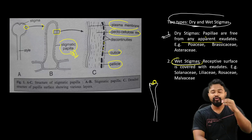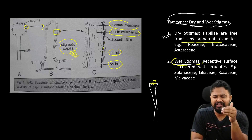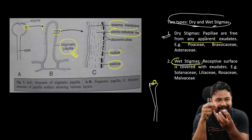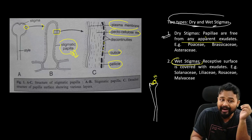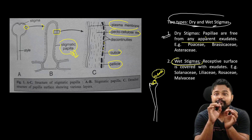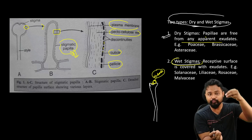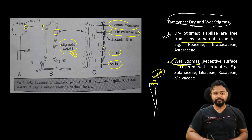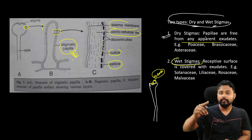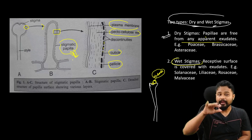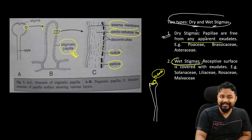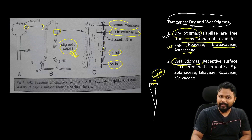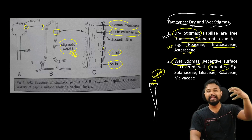The substances released from the papillae — proteins and liquid substances — are very important because pollen needs carbohydrates and water to germinate. The stigma provides water and nutrients to allow pollen to germinate. Pollen germination enables the male gametes to reach the female gametes. Dry stigma examples: Poaceae, Brassica, Asteraceae — these have dry stigma. Wet stigma is comparatively wetter; the receptive surface is covered with exudates.